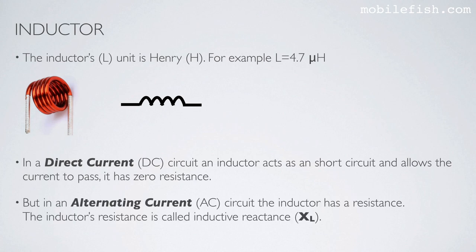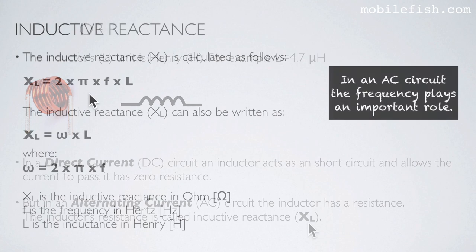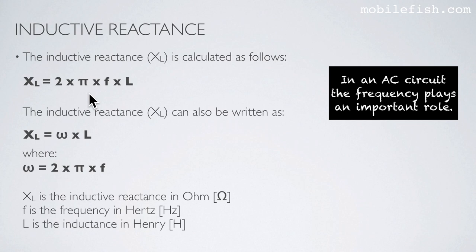In an alternating current circuit the inductor has a resistance called inductive reactance. The inductive reactance is calculated with the formula XL = 2π f L, where omega equals 2 times pi times f and f is the frequency. In an AC circuit the frequency plays an important role when calculating the inductive reactance.